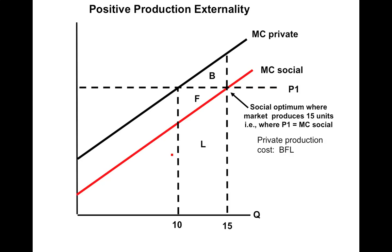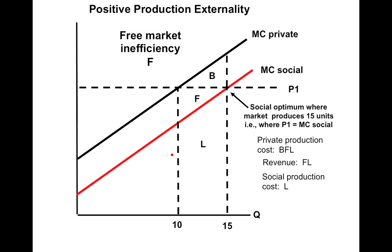Looking at the difference between 10 and 15 units: private firms view the extra five units as costing area BFL — the area under the domestic marginal cost curve. They only get revenue equal to FL, which is price P1 times quantity five. So from the private firm's standpoint, it's not worth producing beyond 10 units. Society views the increase in production as costing only area L — the area under the social cost curve. So from society's standpoint, there is a free market inefficiency equal to area F — the revenue firms could receive in excess of what it costs society to produce that amount.